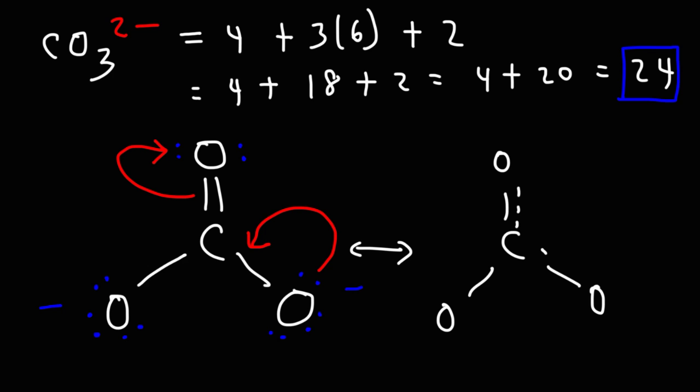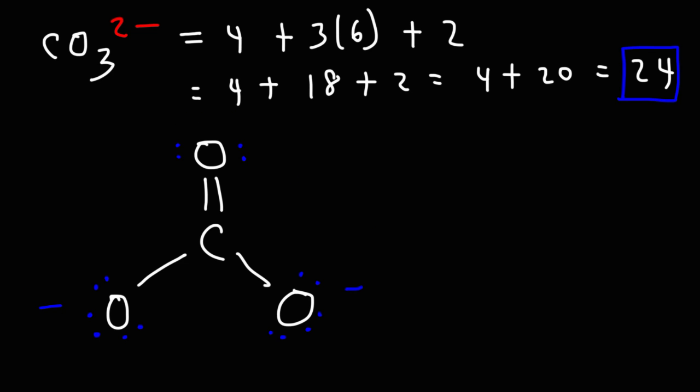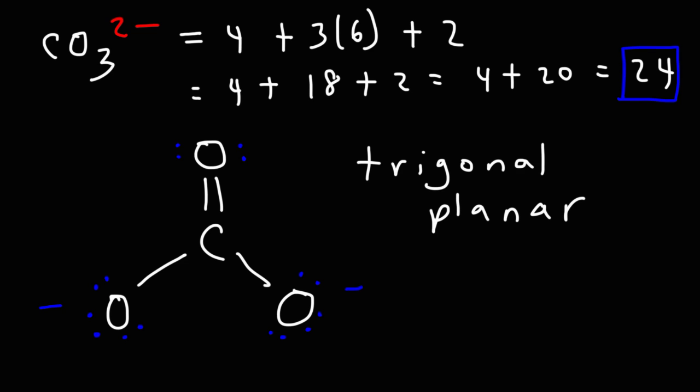But this is the Lewis structure of the carbonate ion. Just know that the double bond is shared equally among the three oxygen atoms. Now, this particular structure is trigonal planar. That's the molecular geometry for the carbonate ion. And trigonal planar structures typically have a bond angle of 120 degrees.